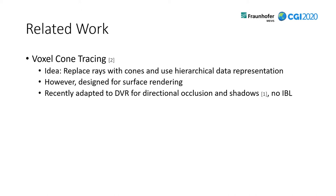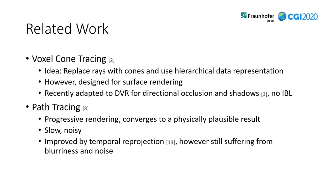One way to accelerate ray-traced effects is voxel cone tracing. The basic idea is to replace rays with cones and use a hierarchical data representation — an improvement over ray tracing. However, it was originally designed for surface rendering and only recently adapted to direct volume rendering, but only for directional occlusion and shadows and without employing image-based lighting. Another popular GI method recently adapted to volume rendering is path tracing, a progressive rendering methodology that converges to a physically plausible result. However, it is very slow and noisy, and although improved by temporal reprojection, it still suffers from blurriness and noise.